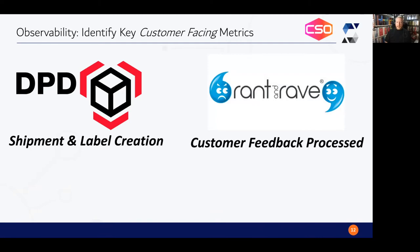At a different company called Rant and Rave, they collected feedback from your customers' customers. What we would look at is how quickly received feedback was processed. So if you're DPD and you've delivered a parcel and asked the receiver if that was a good experience, from the moment that feedback is captured you want it processed as quickly as possible — there's some translation, some sentiment analysis — and ultimately it lands on a dashboard so that users at DPD can understand how their customers are feeling right now and perhaps take action to get in touch with an unhappy customer.